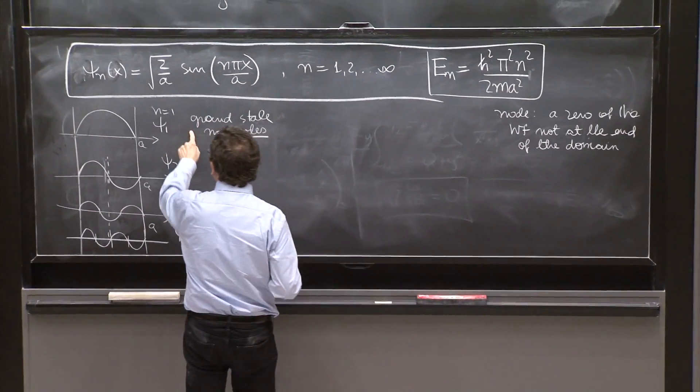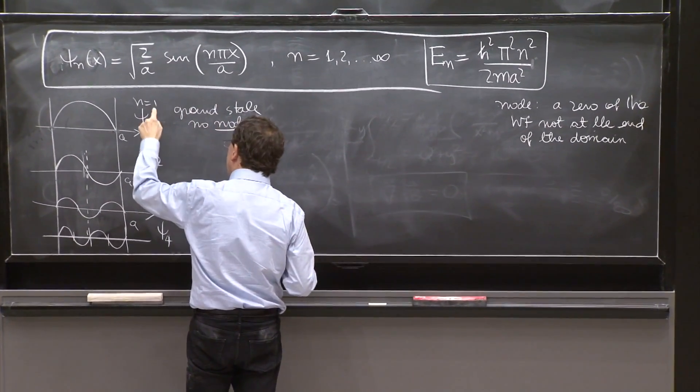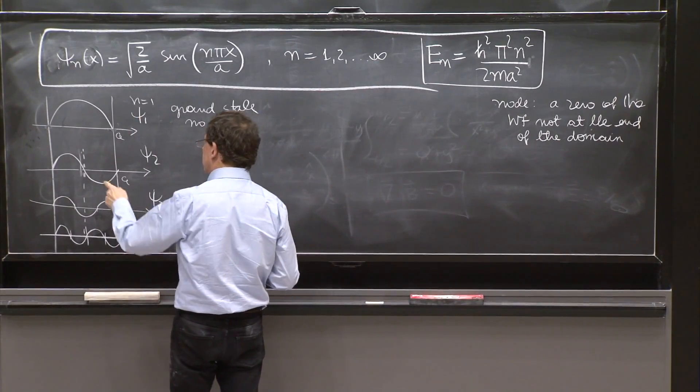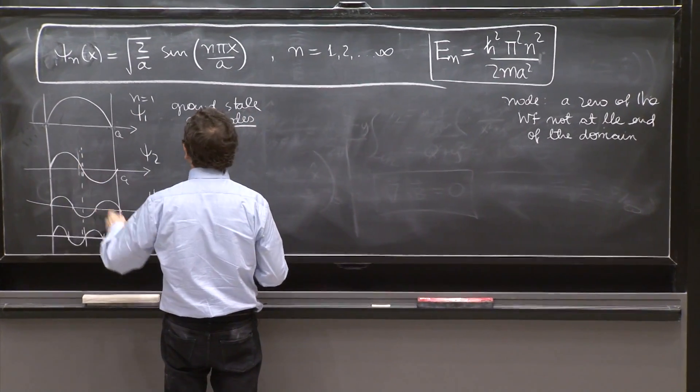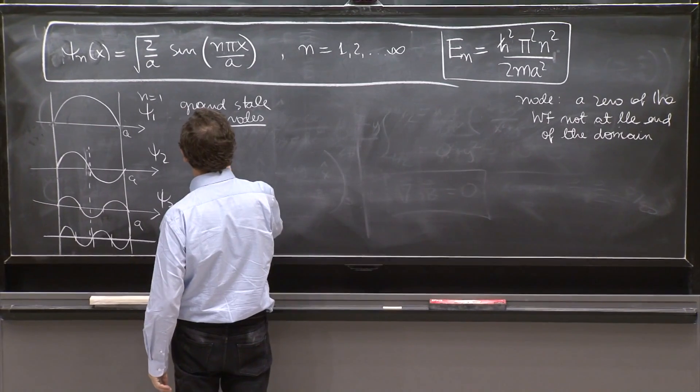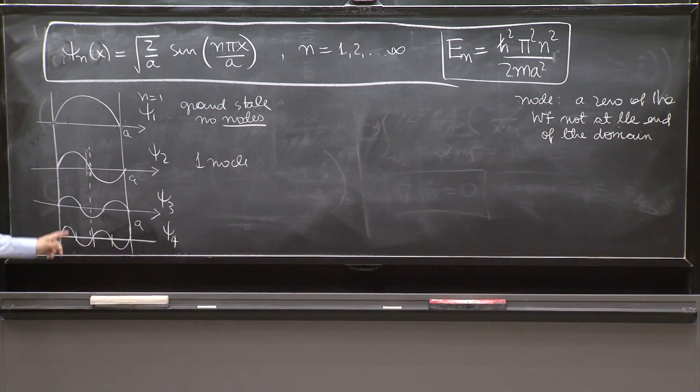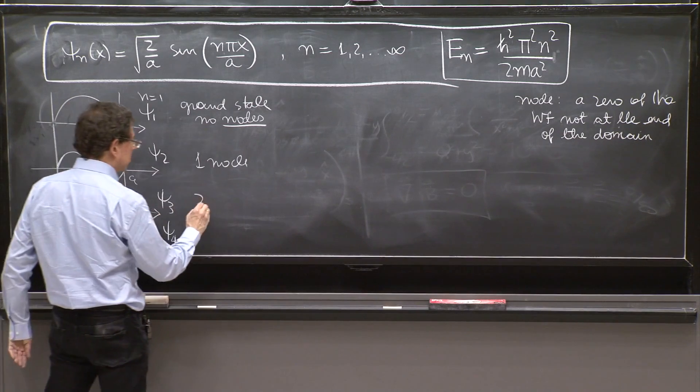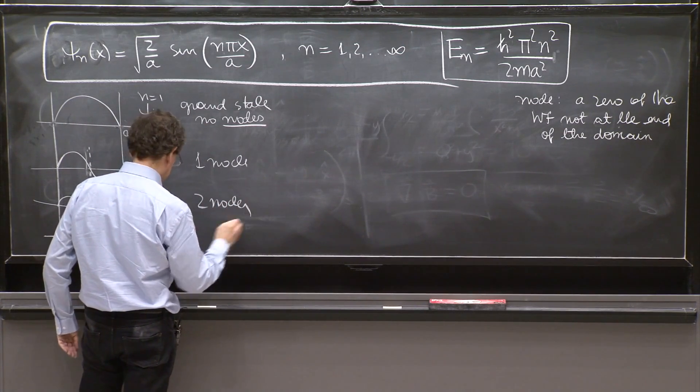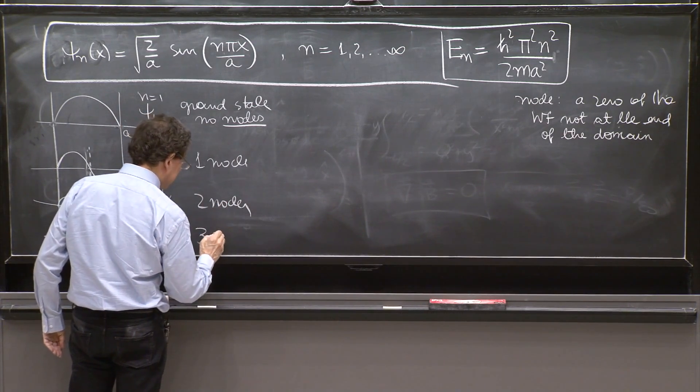And look, this has no nodes, and it's a general fact of bound states of potentials. The next excited state has one node, it's here. The next has two nodes, and then the next is three nodes.